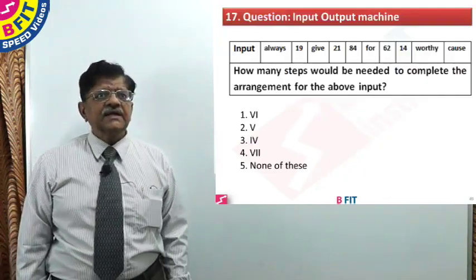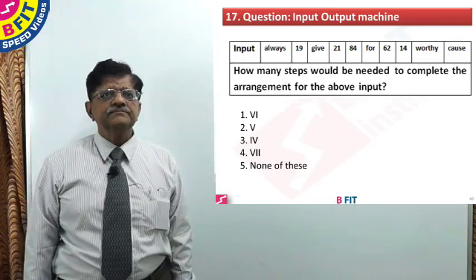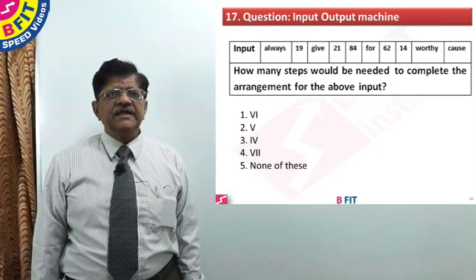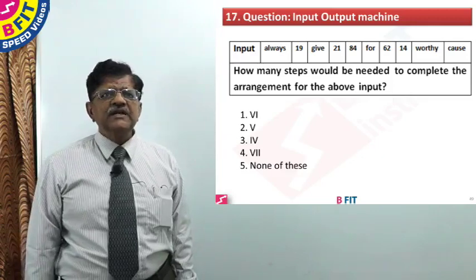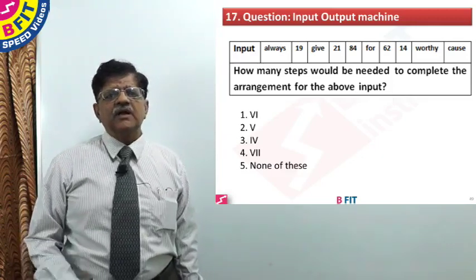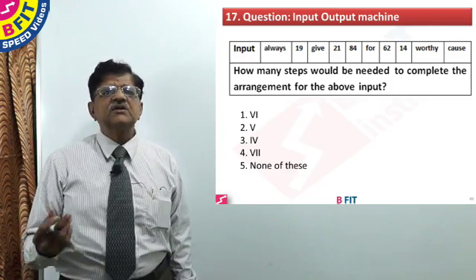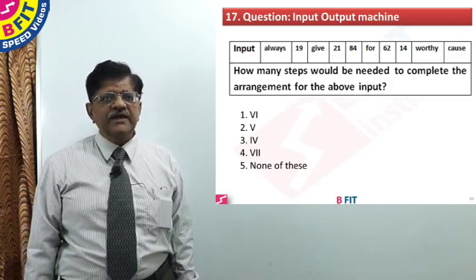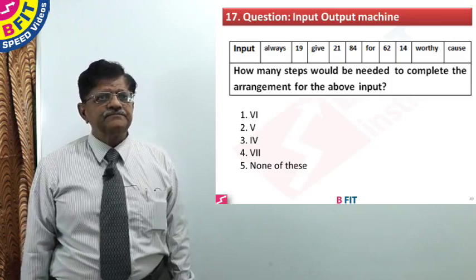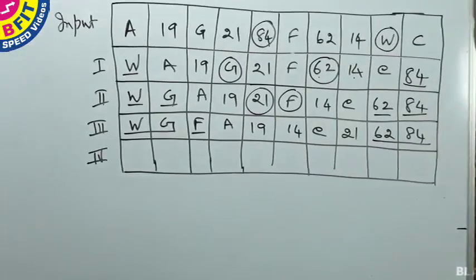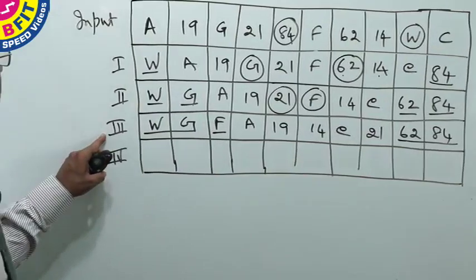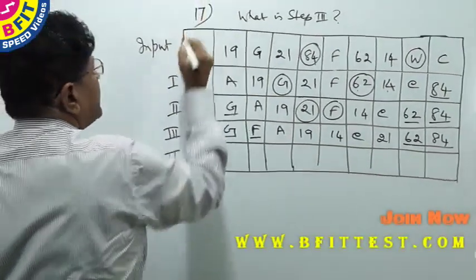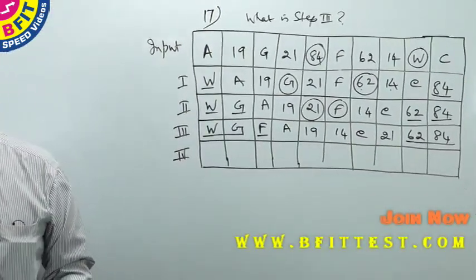Now let us look at the next question, question number 17. Question number 17 has the same input. The question is: how many steps would be needed to complete the arrangement for the above input? Question number 17 is an extension of question number 16, so you can continue from where you left off.